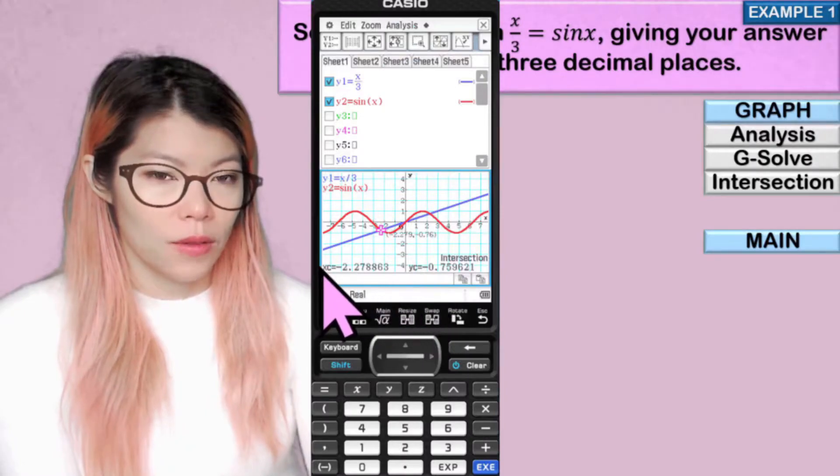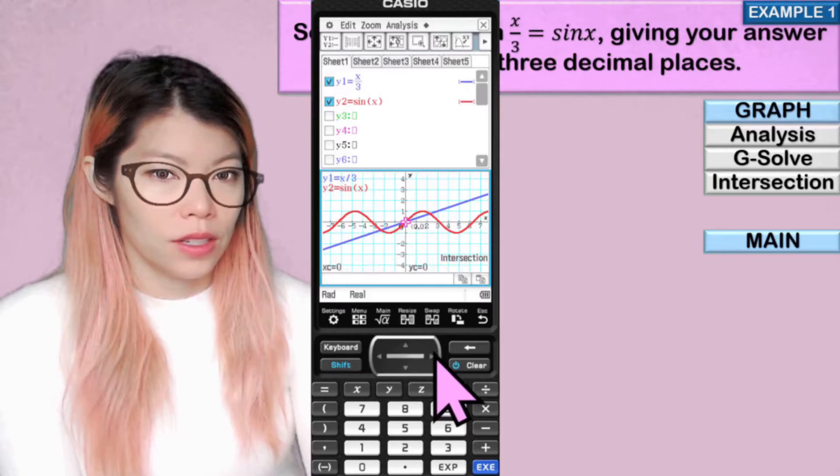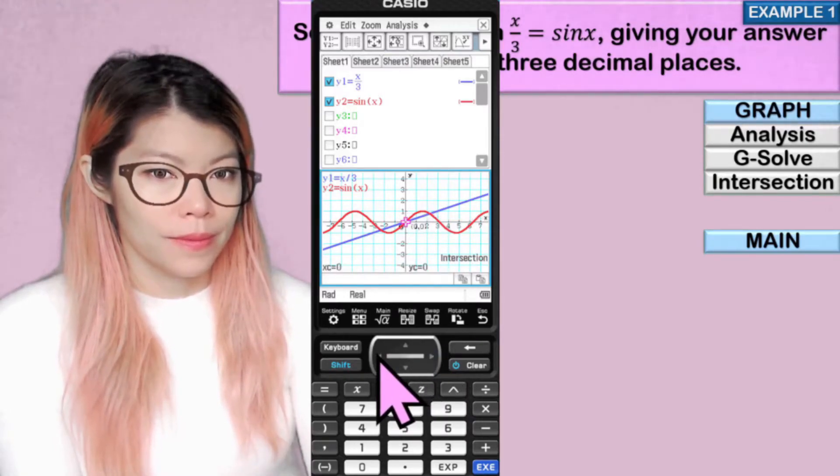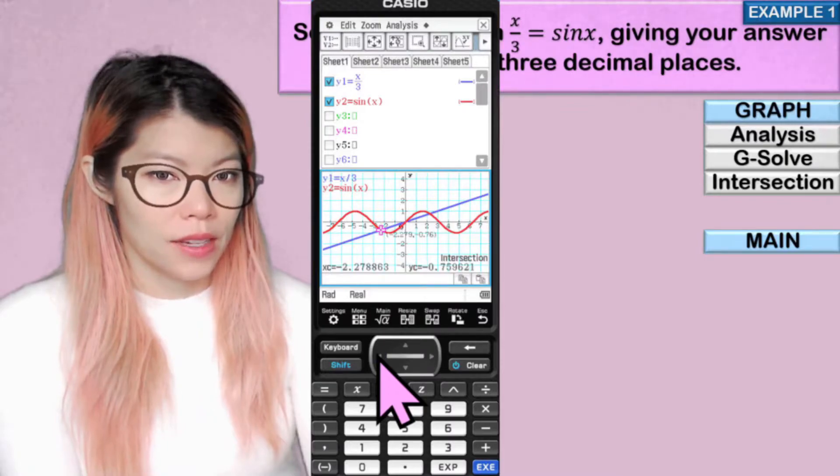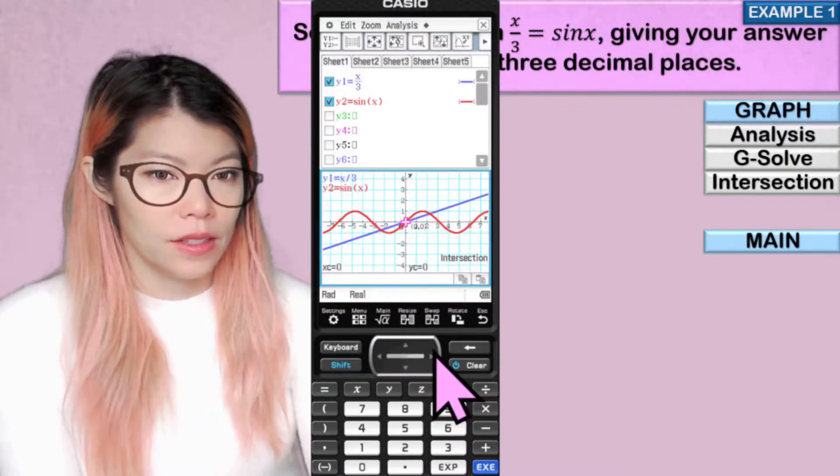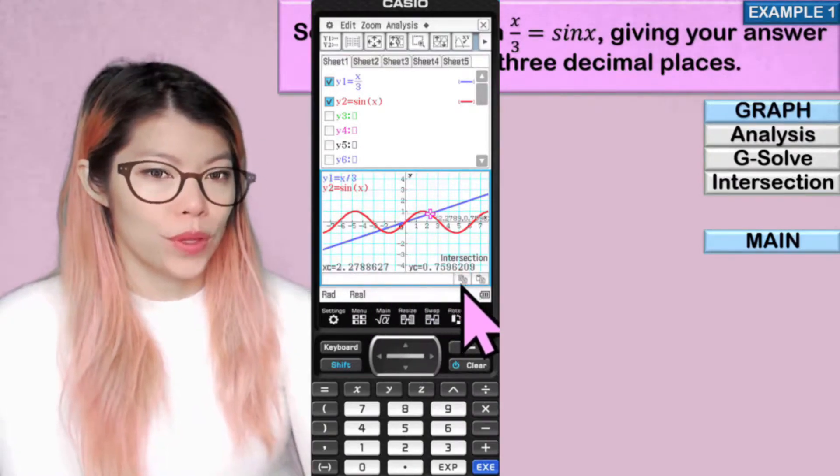And we can see that we have x and y values, and we can click on the right to give us the other intersections. So there's 0, 0, there's negative 2.27 and 0.75, and when you click to the right again, 2.27 and 0.75.